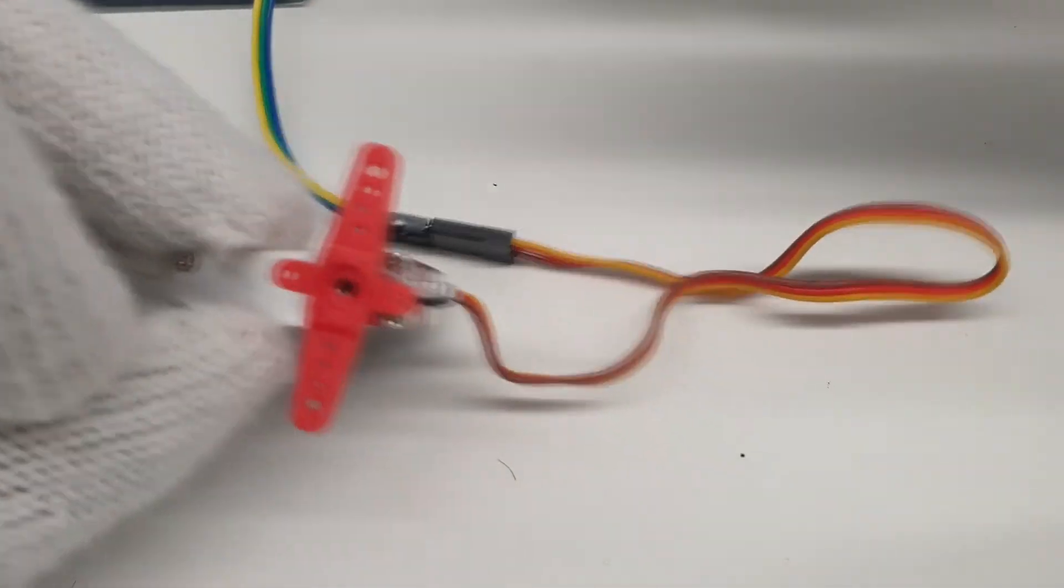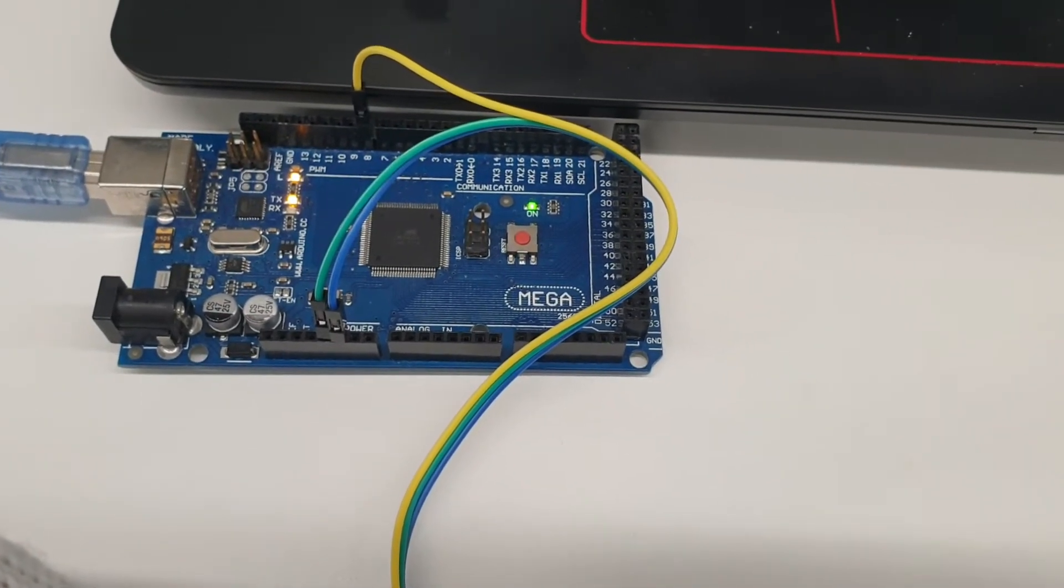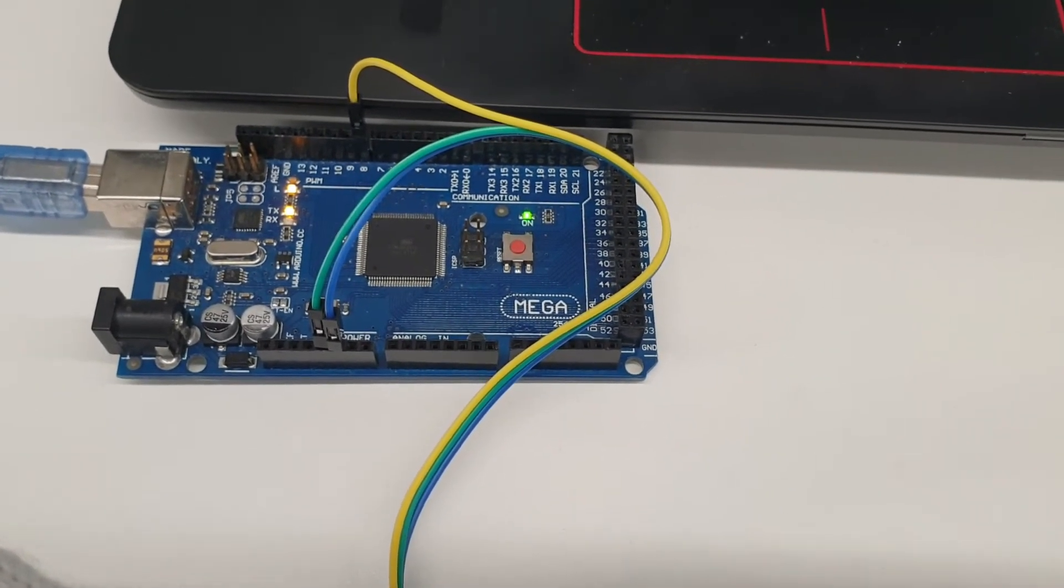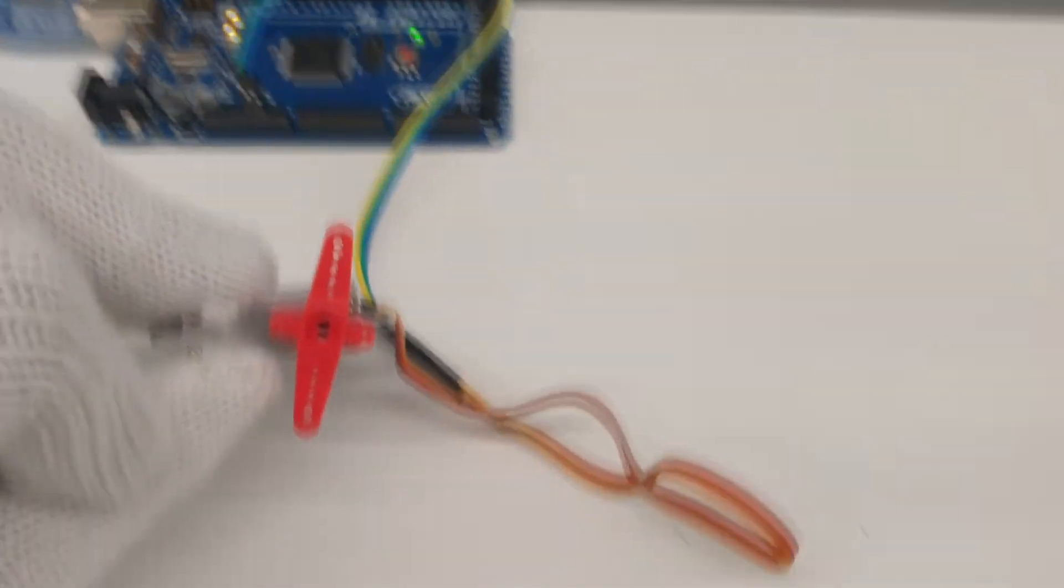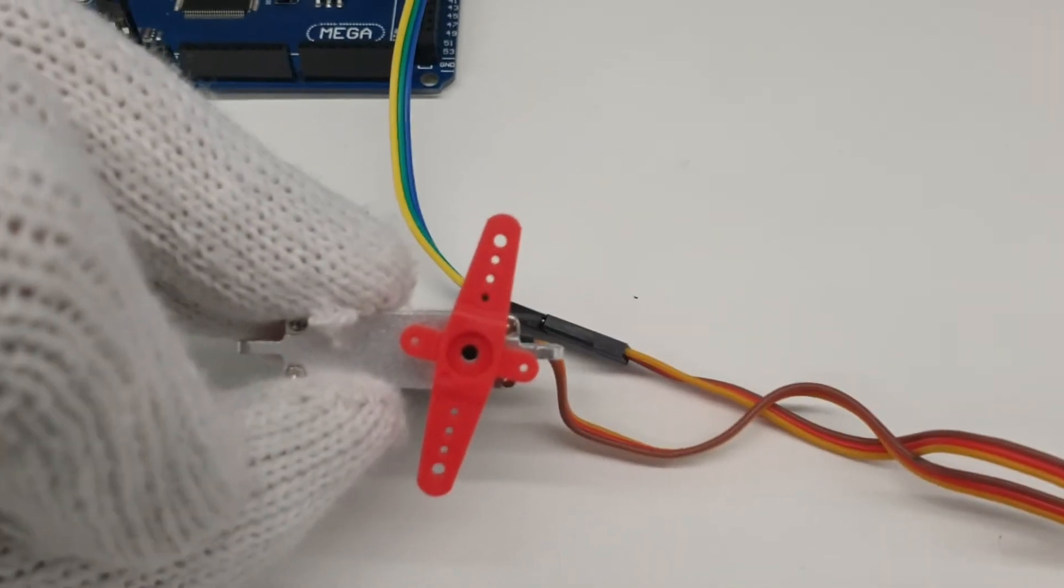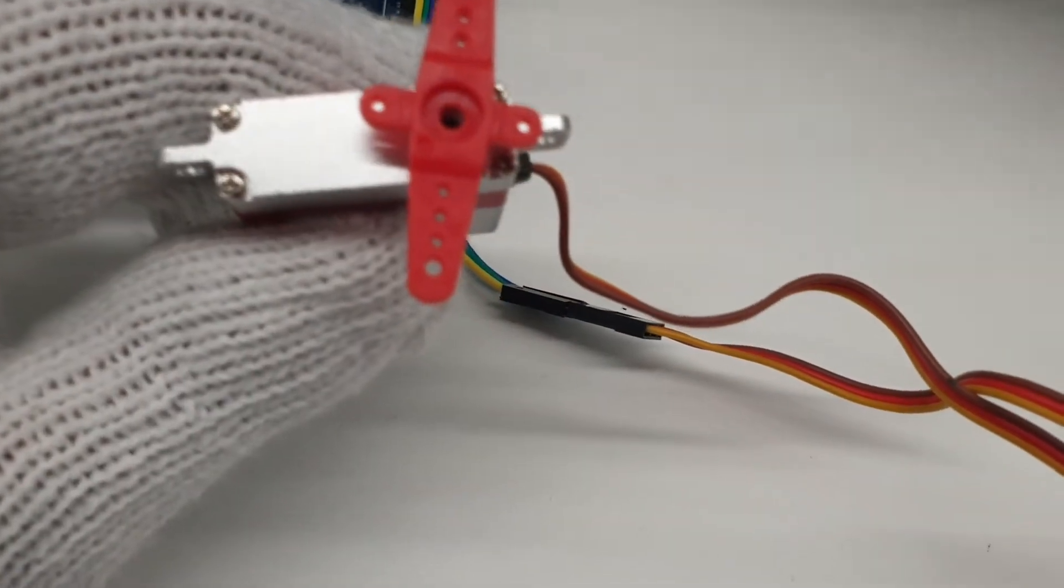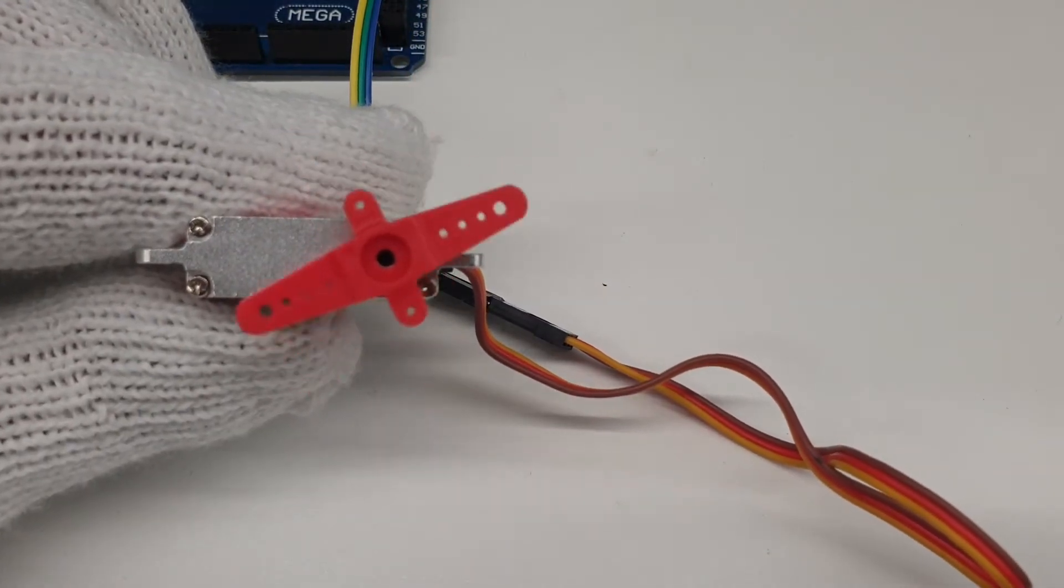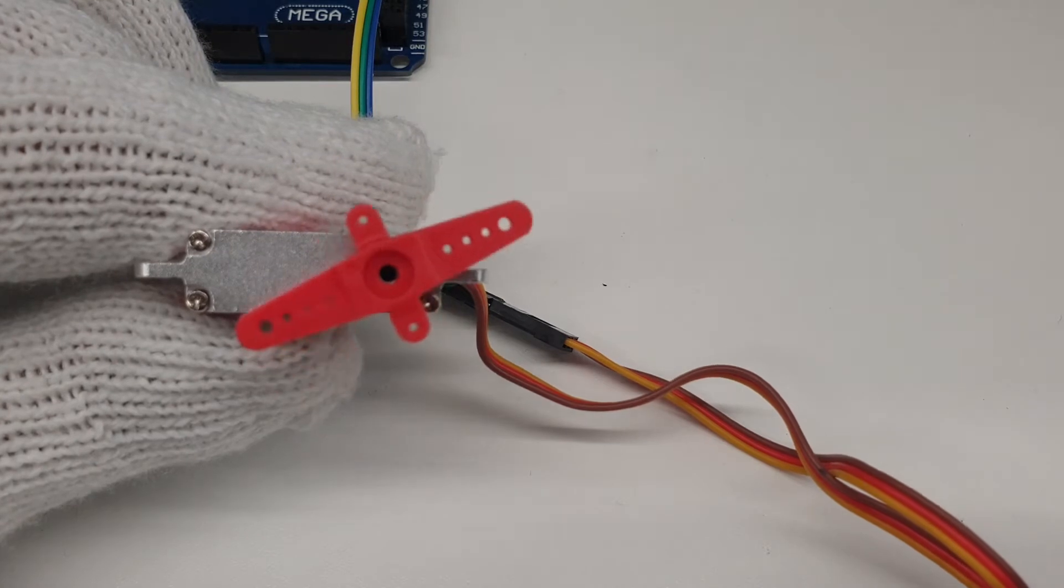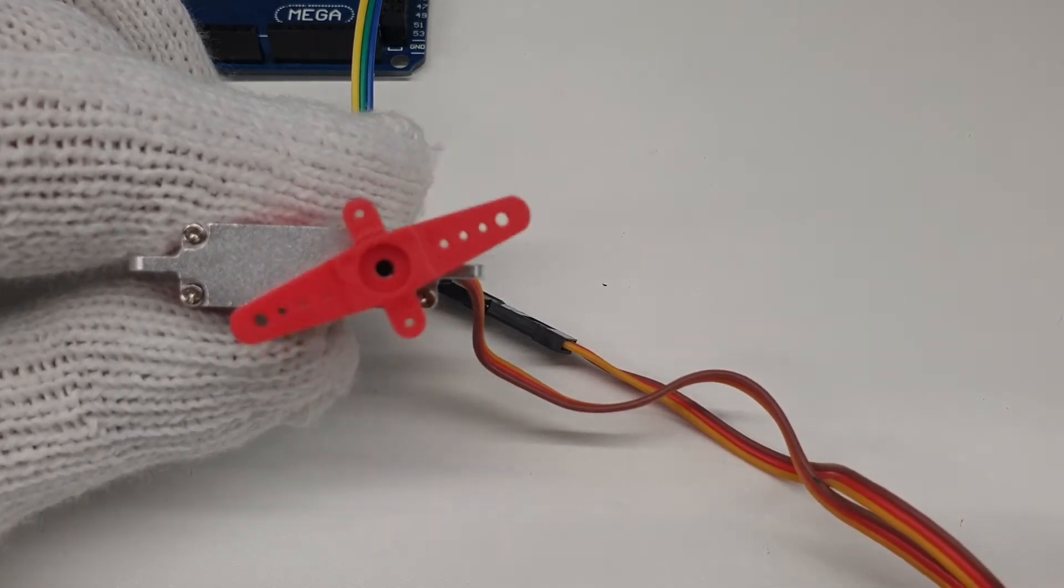So first these are the connections, the 5 volts, green pin, brown pin is the ground and the yellow pin is the signal which is connected to pin 8. So this is the servo and I'll be starting with the sine wave with frequency of 1 Hertz. So it's going from end to end like it's operating range in 1 second.